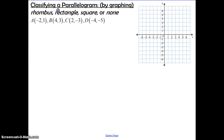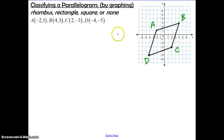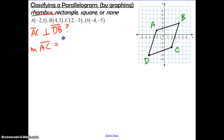Now in this problem we're classifying the parallelogram by graphing — determining whether it's a rhombus, rectangle, square, or none. The first step is to plot each of the points A, B, C, and D and then connect the segments to form parallelogram ABCD. We check for a rhombus first: is diagonal AC perpendicular to diagonal DB? The slope of AC equals (negative 3 minus 1) over (2 minus negative 2), giving us negative 4 over 4, which equals negative 1.